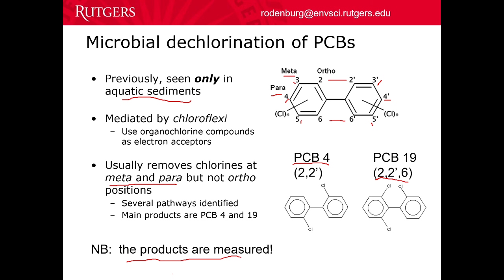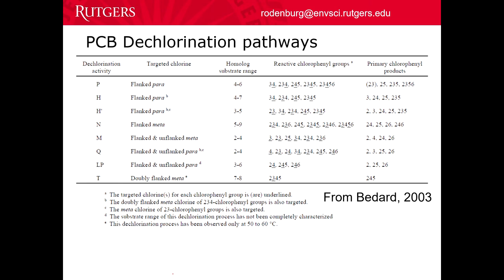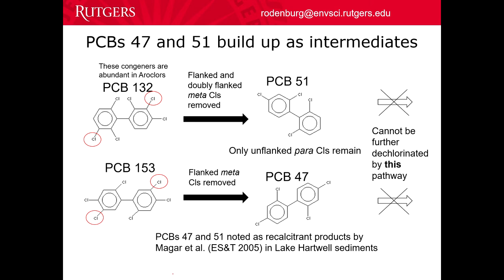Donna Bedard and other people have looked at the different pathways by which this can happen, depending on which chlorines are removed first — sometimes in the para position, sometimes in the meta, sometimes flanked meaning there's another chlorine right next to it, sometimes not. All the PCB congeners are given a number from 1 to 209. A couple of congeners, 132 and 153, are abundant in the Aroclors — the PCB formulations manufactured by Monsanto in North America.